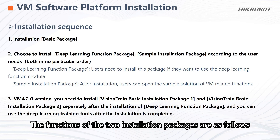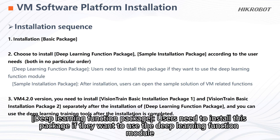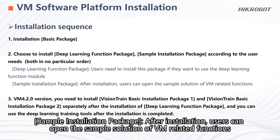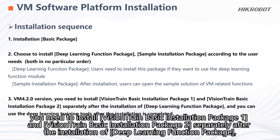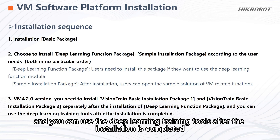The functions of the two installation packages are as follows. The deep learning function package: users need to install this package if they want to use the deep learning function module. The sample installation package: after installation, users can open the sample solution of VM-related functions. For VM 4.2.0, you need to install VisionTrain Basic Installation Package 1 and VisionTrain Basic Installation Package 2 separately after the installation of the deep learning function package, and you can use the deep learning training tools after installation is completed.